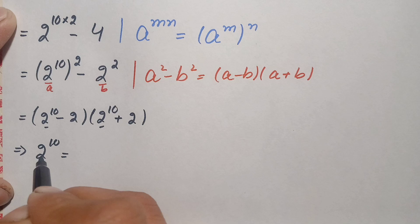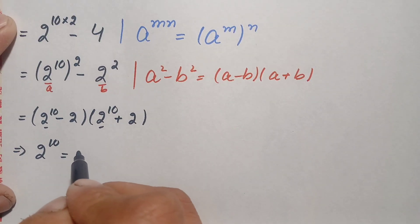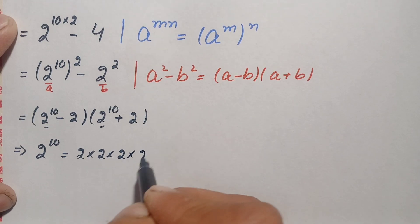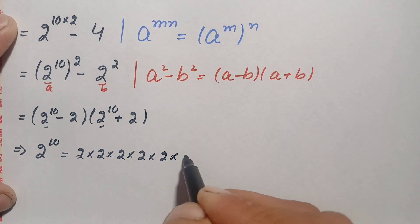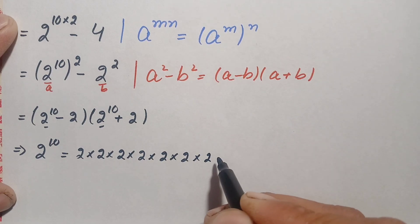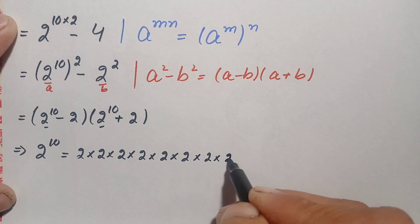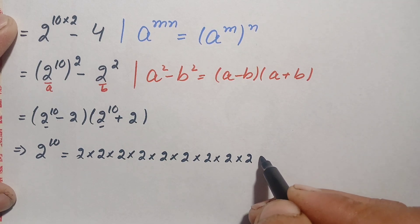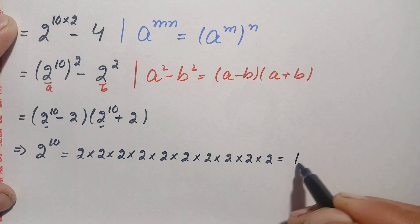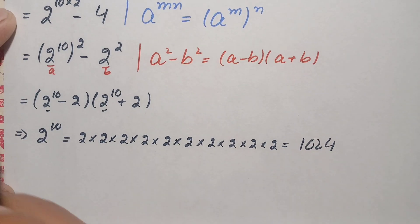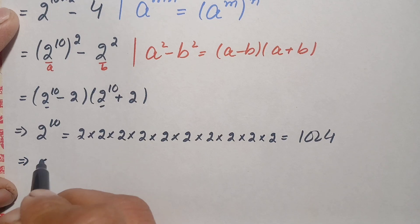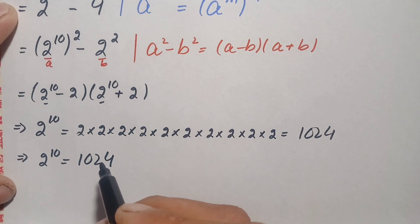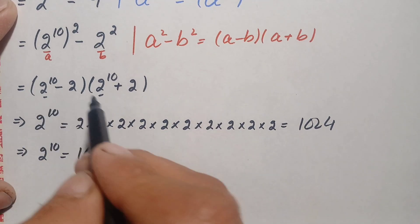2 raised to power 10 means we have to multiply the base 2 ten times. So: 2×2=4, 4×2=8, 8×2=16, 16×2=32, 32×2=64, 64×2=128, 128×2=256, 256×2=512, 512×2=1024. Therefore the value of 2 raised to power 10 is 1024.